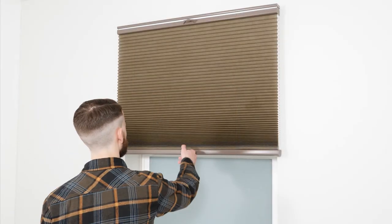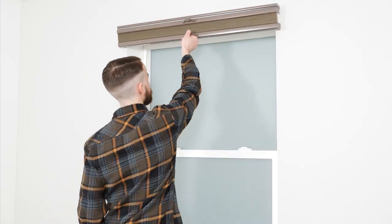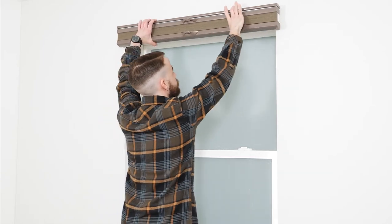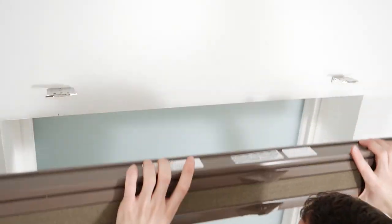If you need to remove your shade, make sure it's all the way up first, then simply push the headrail back and tilt it down to lift it off the brackets.